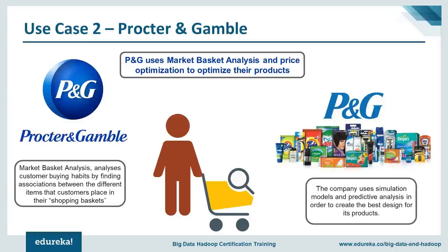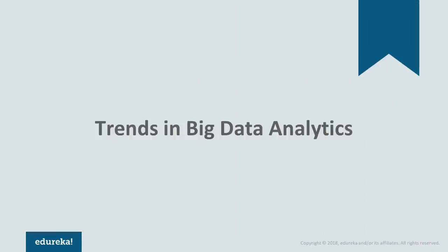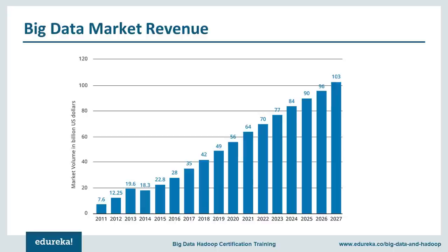Even a simple product like dish soap has complex analytics applied behind it. Now looking at trends, the big data market revenue is projected to grow exponentially from about $42 billion in 2018 to about $103 billion in 2027, as depicted in statistics showing market revenue from 2011 to 2027.